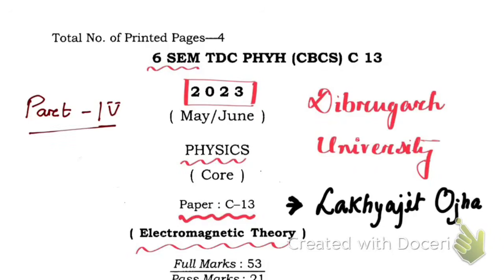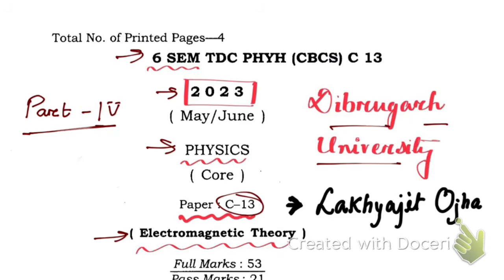Hello friends, this is Part 4 of the 2023 question paper of Electromagnetic Theory C13, a BSc 6th semester question paper from De Brugher University. In the last video, Part 3, we solved up to question number 4b. Now we're going to start from question number 5 in this video.